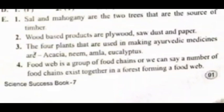Sal and Mahogany are the two trees that are sources of timber. The four plants that are used in making Ayurvedic medicine are Acacia, Neem, Amla, and Eucalyptus.